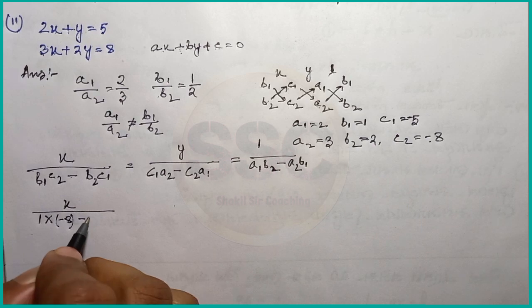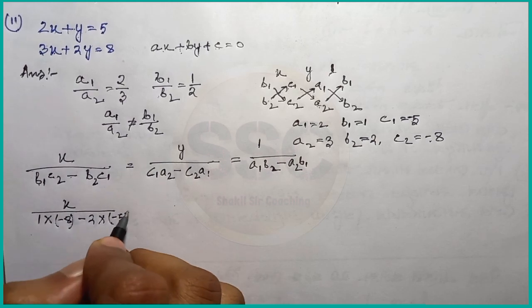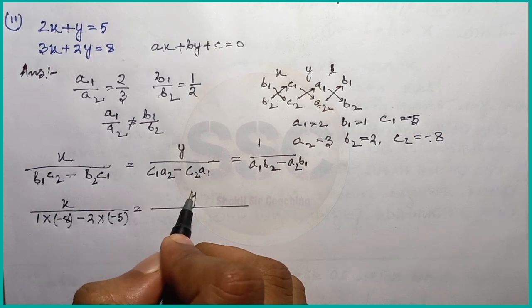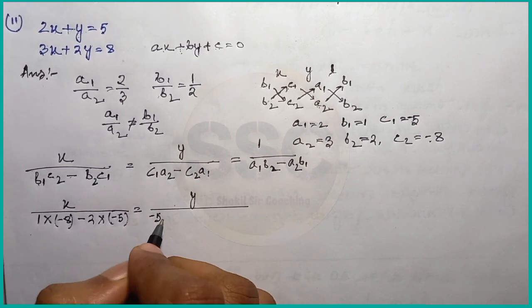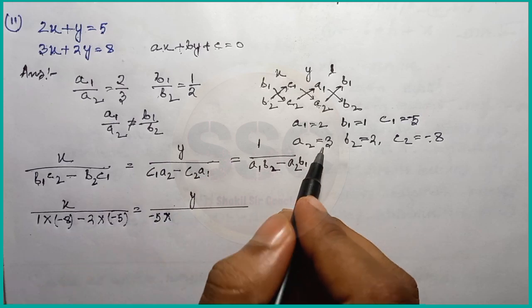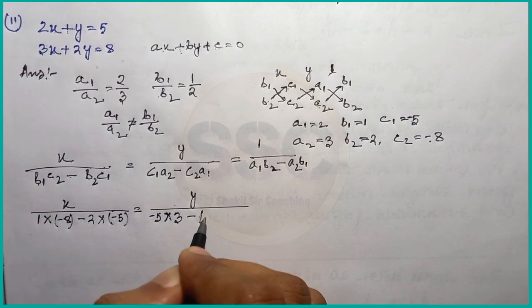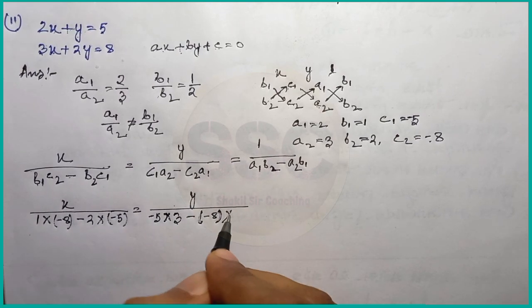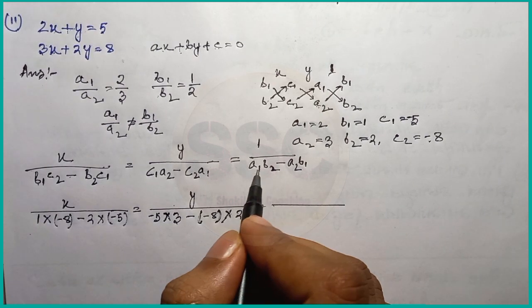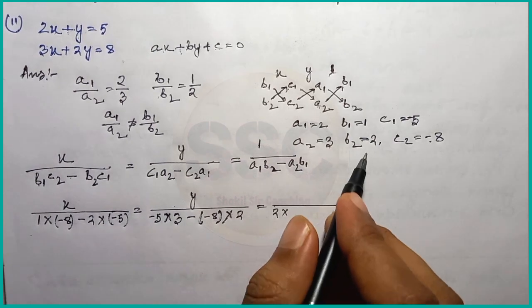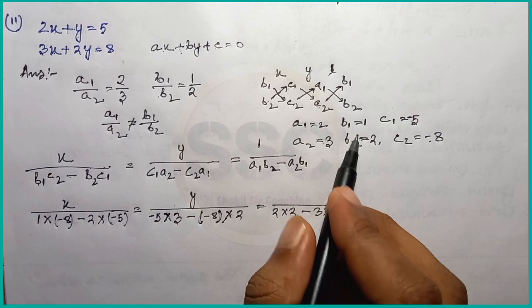B2 is 2, into C1, C1 is minus 5. We are looking at A2 — A2 is 2 — into C2, minus C2. Using the cross-multiplication formula: a1 is 2, b2 is 2, and b1 is 1.